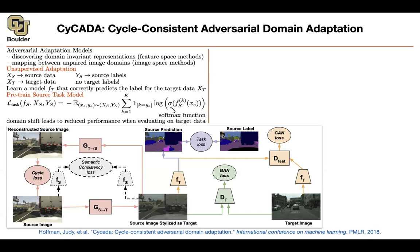We have the corresponding source label. We are doing semantic segmentation, which you can think of as per-pixel classification — classifying every single pixel in the image. This is a car, color it blue; this is the road, color it magenta, etc. We have the source image and source label. Now for domain adaptation, you also have target images — real images from real roads, real cars, and real human beings. At the end of the day, you want to do semantic segmentation on those real-world target images.